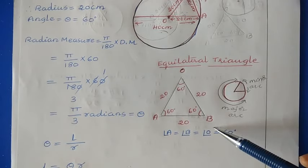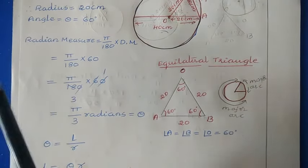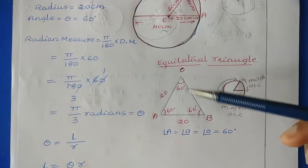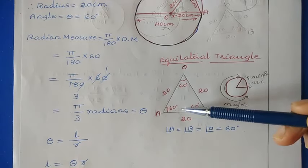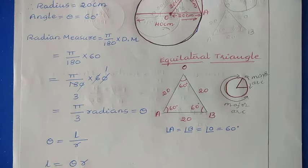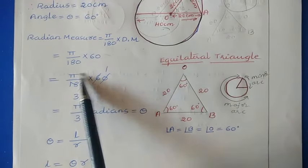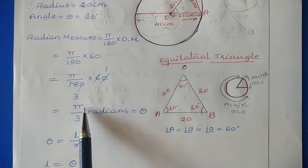In an equilateral triangle, all angles equal 60 degrees. So theta = 60 degrees at the center. But theta must be in radians. Using the formula: radian measure = (π/180) × 60. After cancellation, theta = π/3 radians.